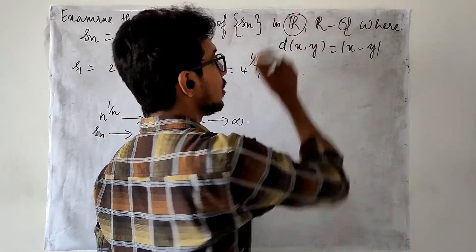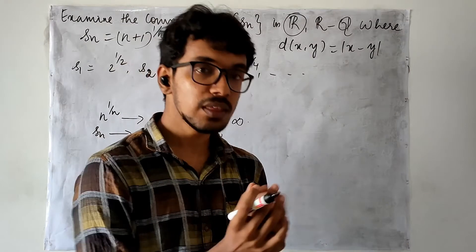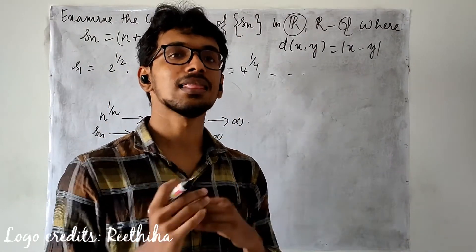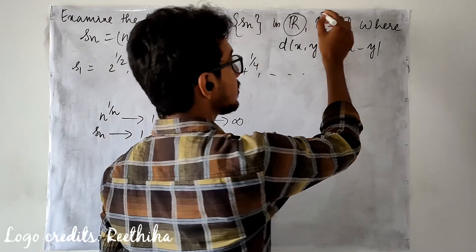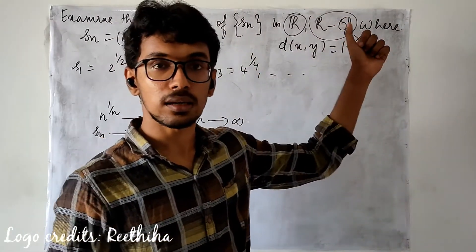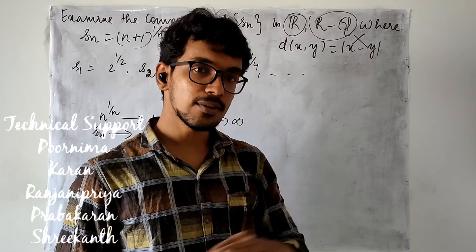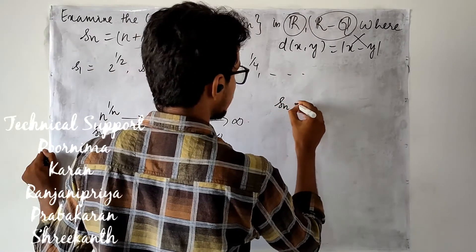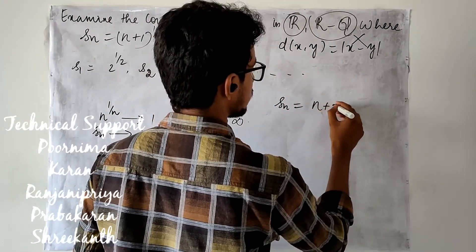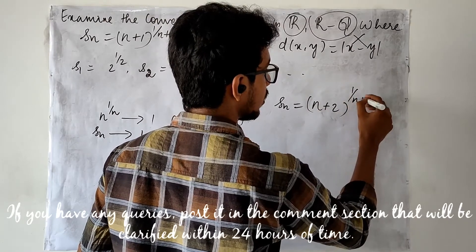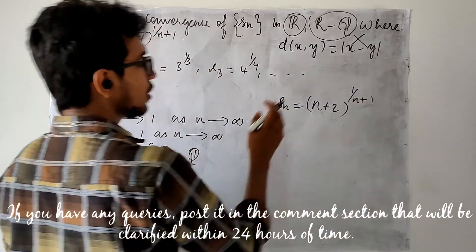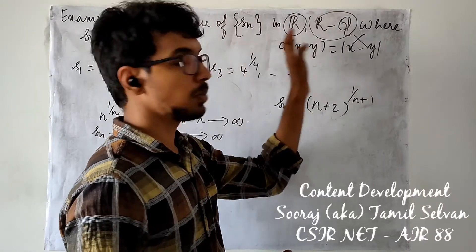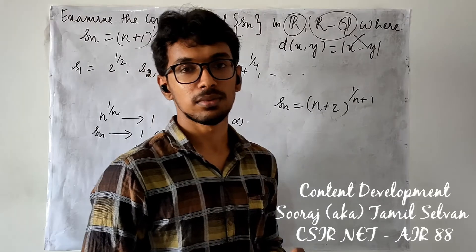In Euclidean spaces only, we have the Cauchy criterion for convergence, which tells you whenever a sequence is Cauchy, it is convergent. But the space of irrational numbers is not a Euclidean space, so here a Cauchy sequence does not imply a convergent sequence. Similarly, if you take Sn to be (n+2)^(1/(n+1)), using the same idea you may prove this is a Cauchy sequence in both spaces, but it's convergent only in the space of real numbers.